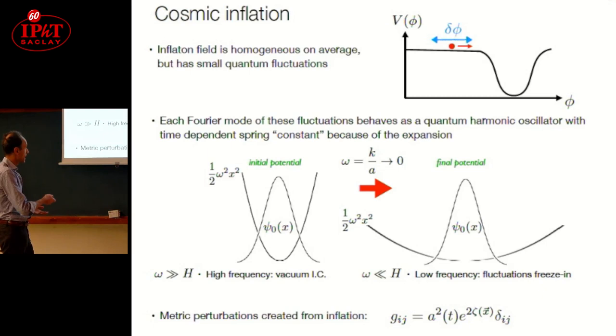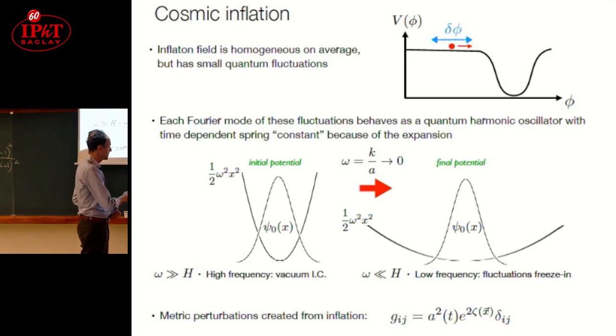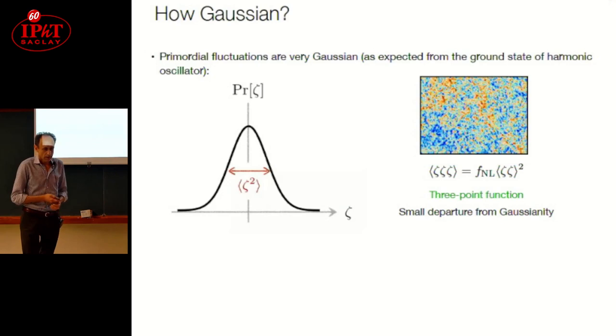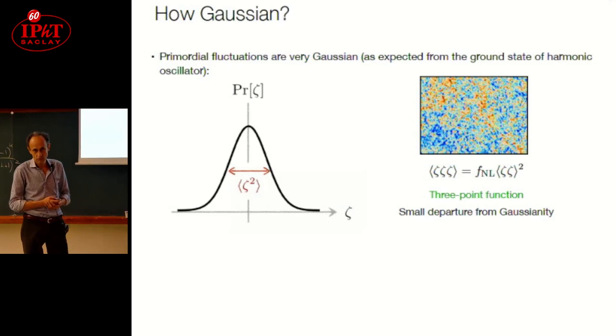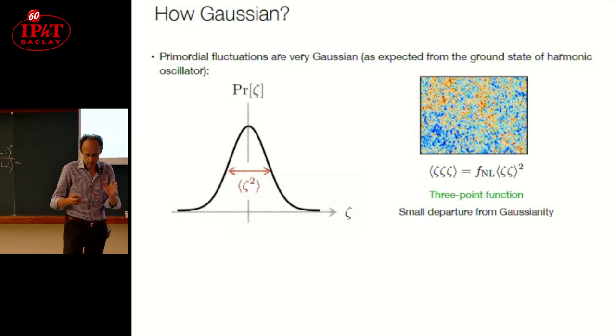Inflaton perturbations imply also metric perturbations. For instance, the spatial metric can be written in this way, where zeta is a tiny fluctuation describing the primordial perturbation, and this is the scale factor describing the homogeneous expansion. Since these fluctuations come from the ground state of a harmonic oscillator, supposedly they should be very Gaussian.